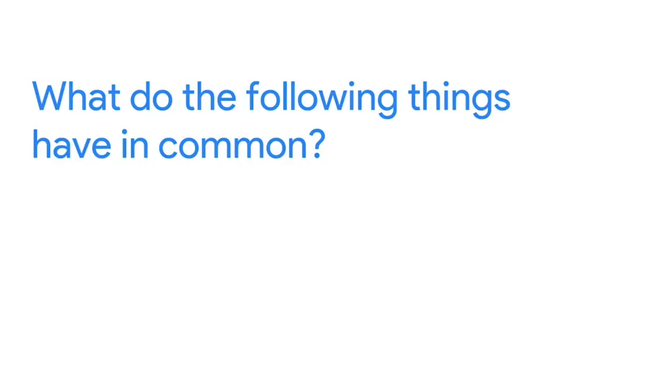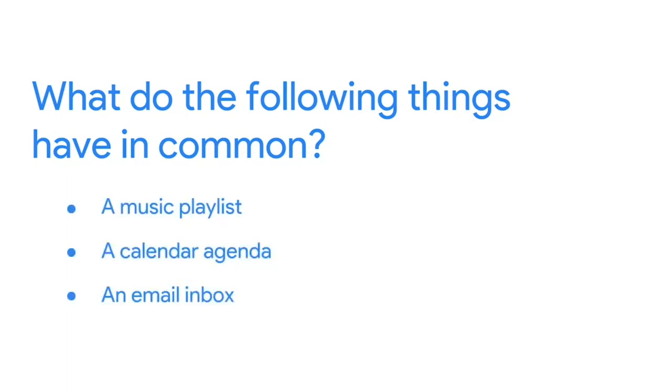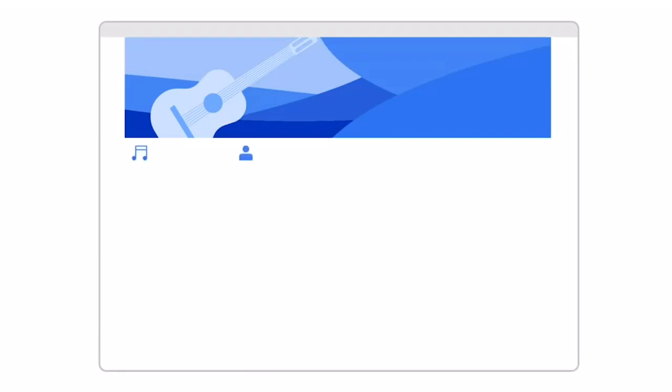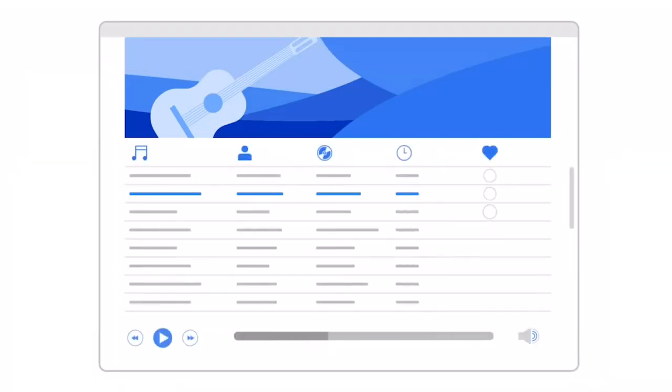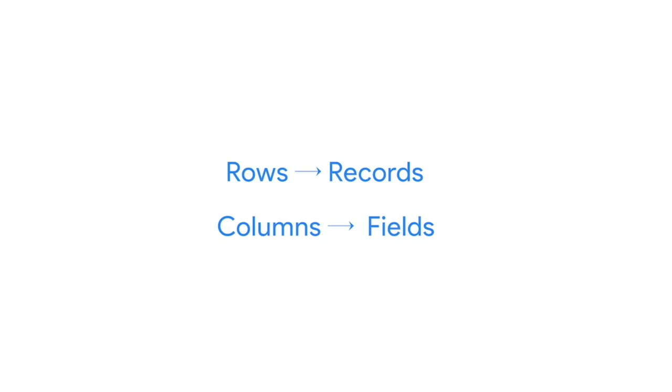Here's a riddle for you. What do a music playlist, a calendar agenda, and an email inbox have in common? The answer is they're all arranged in tables. A data table or tabular data has a very simple structure: it's arranged in rows and columns. You can call the rows records and the columns fields — they basically mean the same thing. But records and fields can be used for any kind of data table, while rows and columns are usually reserved for spreadsheets. When talking about structured databases, people in data analytics usually go with records and fields. Sometimes a field can also refer to a single piece of data, like the value in a cell.